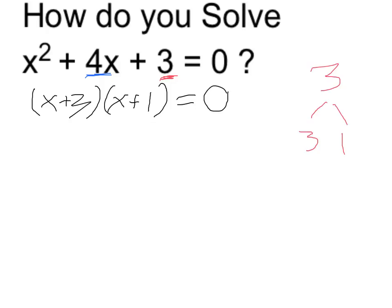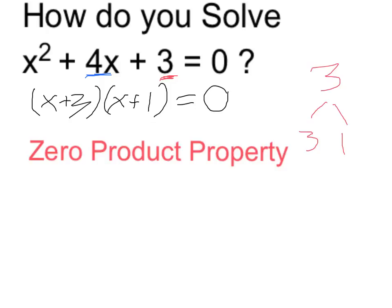Now I'm going to apply what's called the 0 product property. This property tells me that if the whole thing is 0, if x plus 3 times x plus 1 is equal to 0, then either x plus 3 will equal 0 or x plus 1 equals 0.